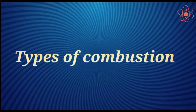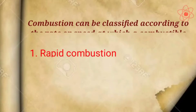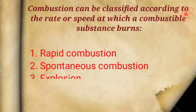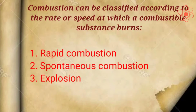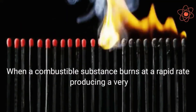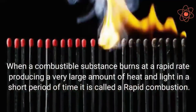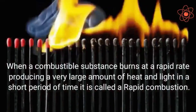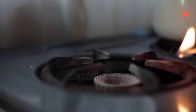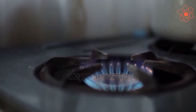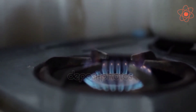Types of Combustion. Combustion can be classified according to the rate or speed at which a combustible substance burns. First, Rapid Combustion — when a combustible substance burns at a rapid rate, producing a very large amount of heat and light in a short period of time, it is called rapid combustion. For example, cooking gas (LPG) starts burning immediately when a burning matchstick is brought near it, producing heat and light.